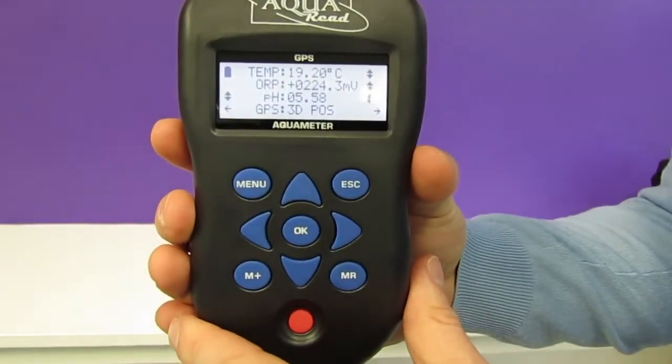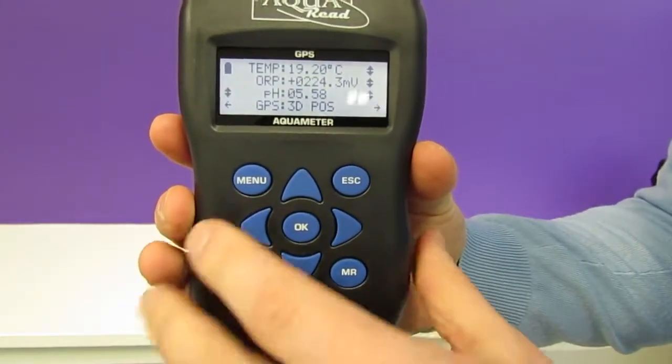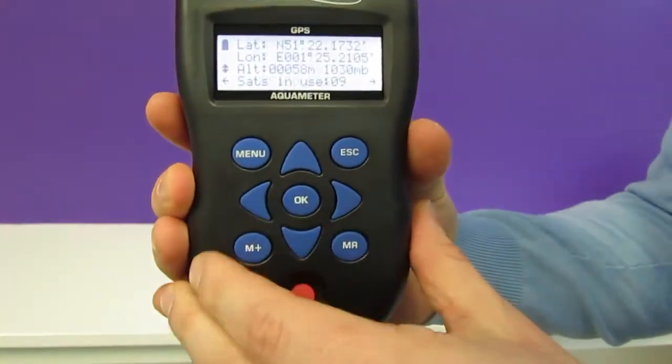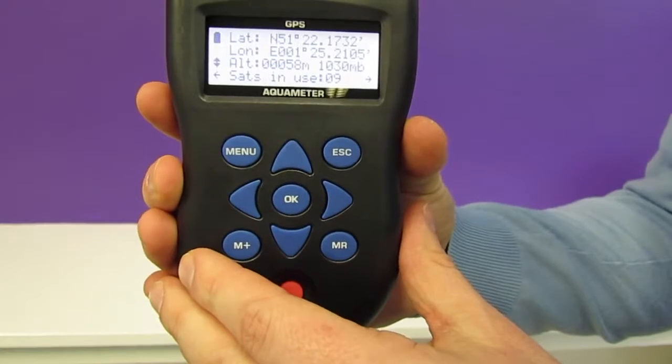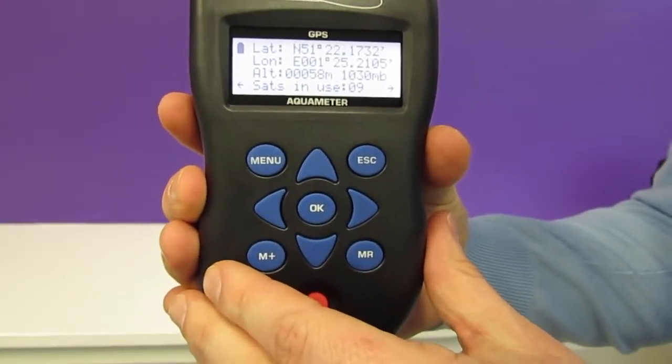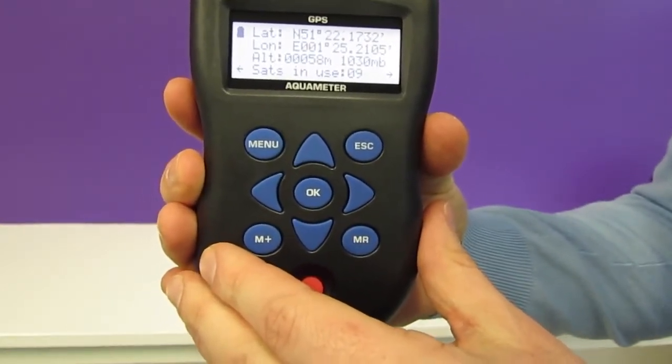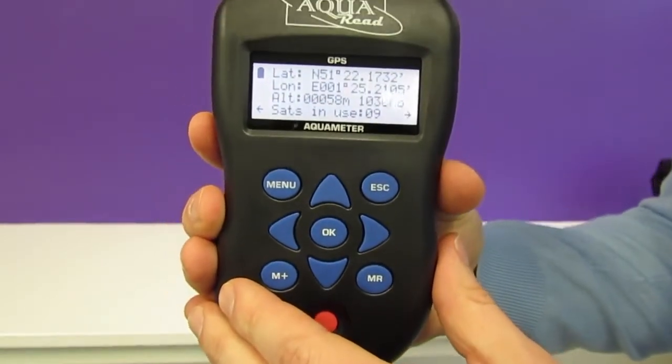We can see here on the screen that we currently have a 3D GPS position. If we scroll to the left we can see the lat long coordinates and we can also see the air pressure because the GPS Aquameter has a built-in pressure sensor. It will also give us some useful information and tell us how many satellites are currently being used.